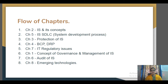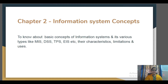First we are going to do Chapter 2, then Chapter 5, then Chapter 3, then Chapter 4, then Chapter 7, then Chapter 1, then Chapter 6, and the last is Chapter 8. So what does Chapter 2 contain? The name of the chapter is Information System Concepts and it describes the basic concepts of what is an information system.